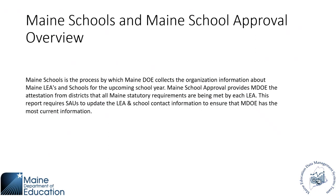Main Schools is the process by which Maine DOE collects organization information about Maine LEAs and schools for the upcoming school year. This is a way for us to get information and ensure that all schools are following statutory requirements, and ensure we have updated contact information for anyone we need to reach. It's important that this is up to date and accurate so we can get everything set for next year. We also use this report to set up Synergy and ensure everyone has access and accurate school grade levels.